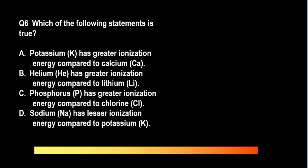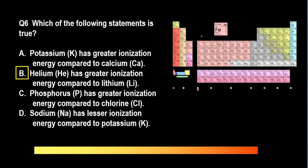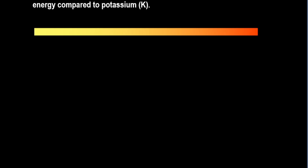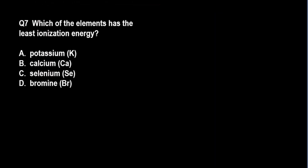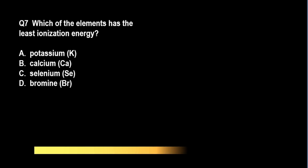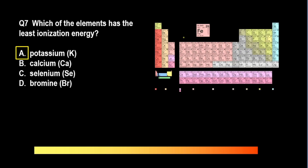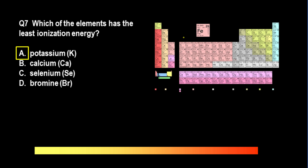The correct answer is letter B. Remember the trend for ionization energy — it increases as we move from left to right. Which of the elements has the least ionization energy? A. Potassium, B. Calcium, C. Selenium, D. Bromine. Potassium, being the leftmost among the four, would have the least ionization energy — it would give up its electrons more easily. Again, ionization energy increases left to right.